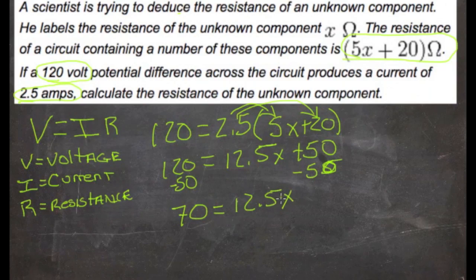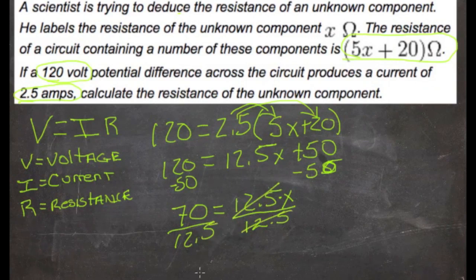We have 12.5 times x here. We need to get rid of that 12.5, so we do the opposite of multiplication: divide. Divide both sides by 12.5. 12.5 cancels here, and we get 5.6 equals x.